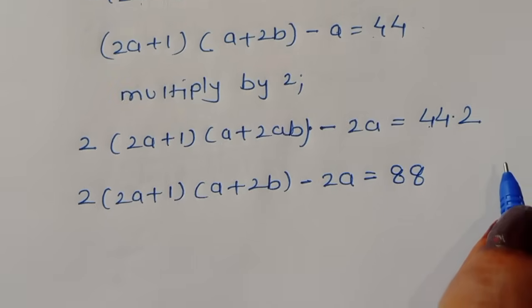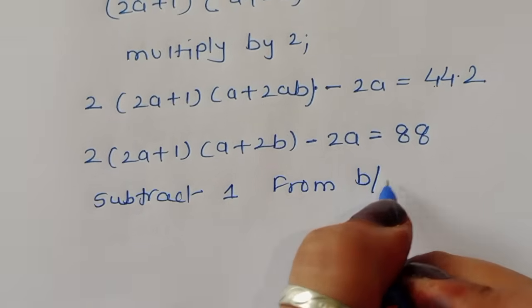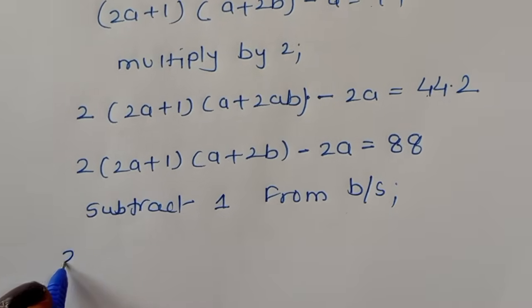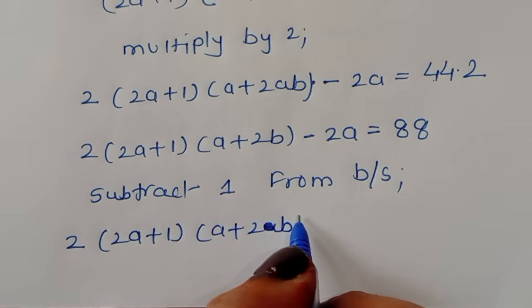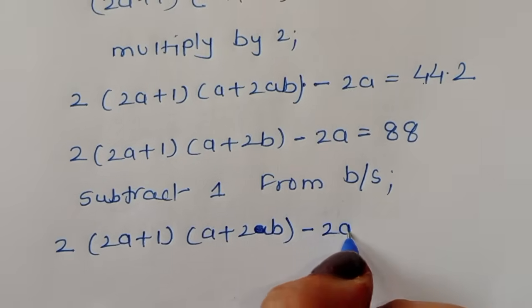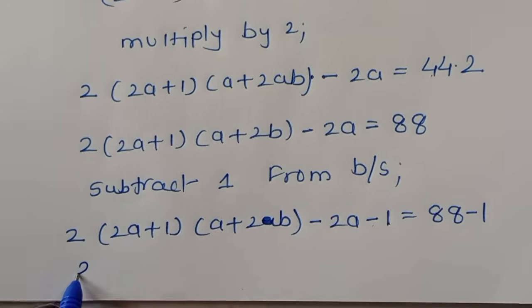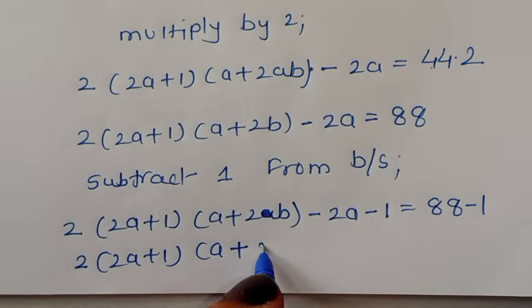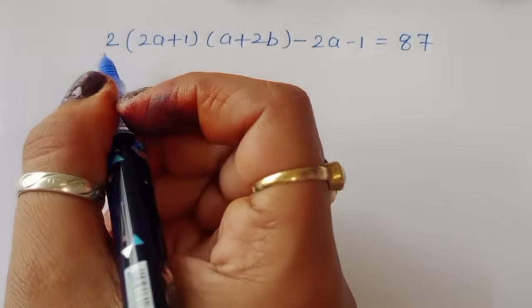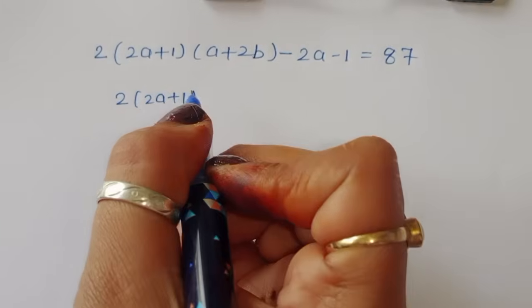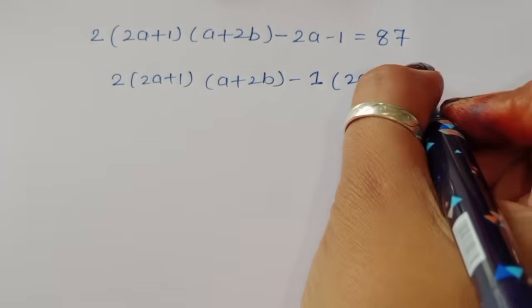Next, we subtract 1 from both sides to form the equation. So: 2(2a + 1)(a + 2b) − 2a − 1 = 87.